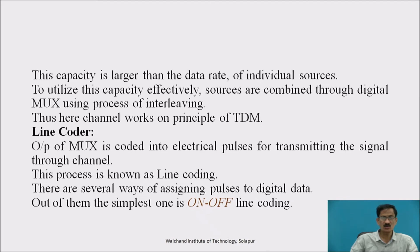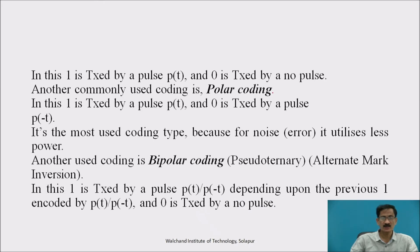Line Coder: The output of the multiplexer is coded into electrical pulses for transmitting the signal through the channel. This process is known as line coding. There are several ways of assigning pulses to digital data. The simplest is ON-OFF line coding, where 1 is transmitted by a pulse p(T) and 0 is transmitted by no pulse. Another commonly used coding is polar coding, where 1 is transmitted by p(T) and 0 is transmitted by -p(T). Polar coding is most used because it utilizes less power against noise.